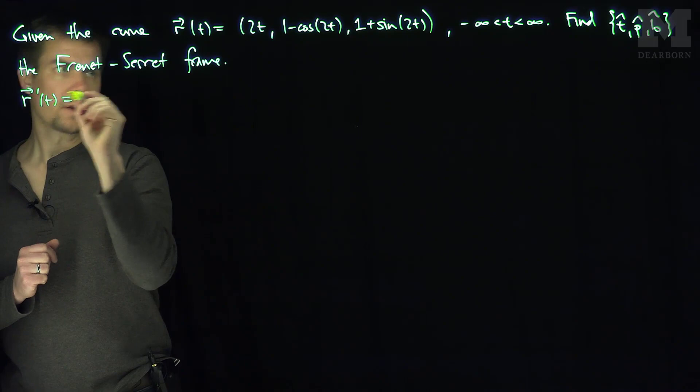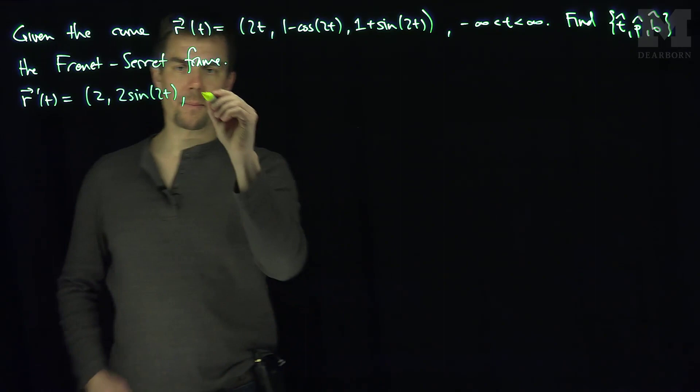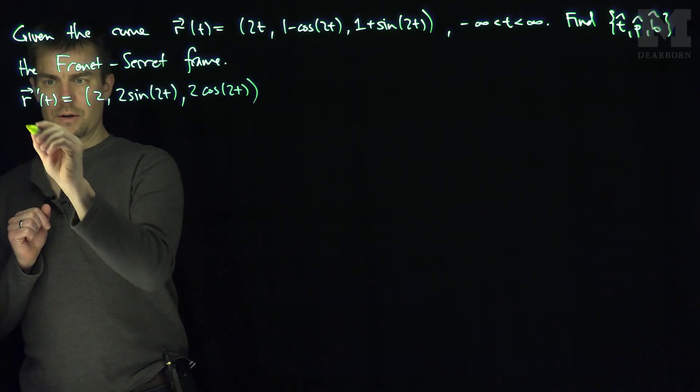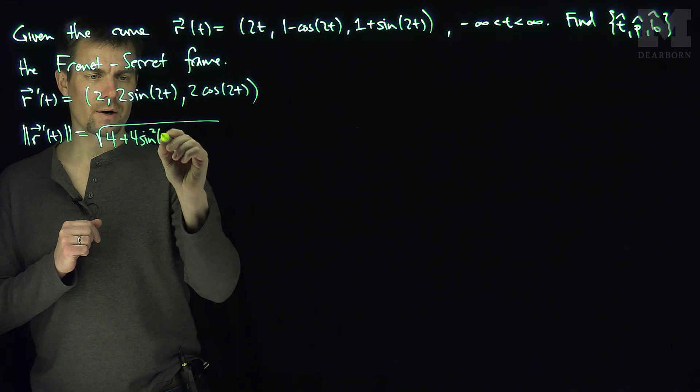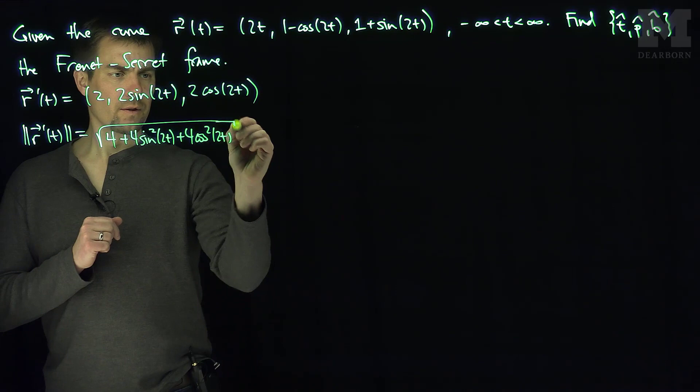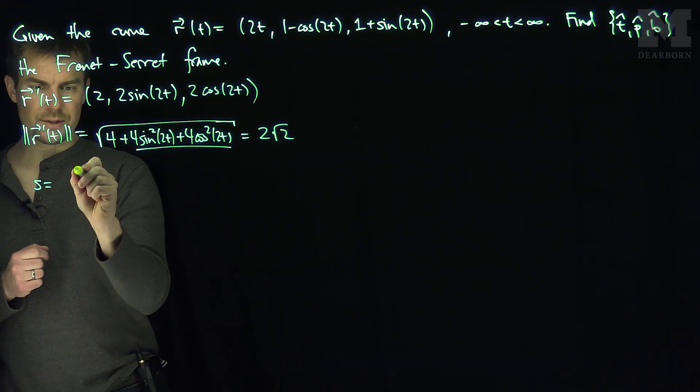To do this, we need to put the curve into arc-length parameter. So let's find the velocity of the curve. R prime of t is going to be (2, 2sin(2t), 2cos(2t)), since the derivative of negative cosine is positive sine, and the derivative of sine is cosine. The speed of the curve, |R'(t)|, is the square root of 4 + 4sin²(2t) + 4cos²(2t). The sine and cosine terms add up to 4, so this is the square root of 8, which is 2√2.